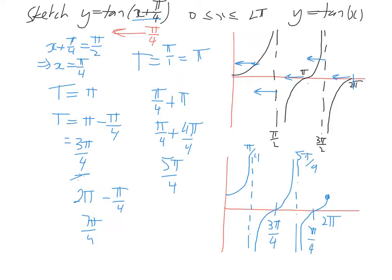So this tells us how far we have to move, either left or right. But we still have this. We identify the period the same way. To find out the asymptotes, we let whatever's inside the brackets equal pi on 2. Solve for x.